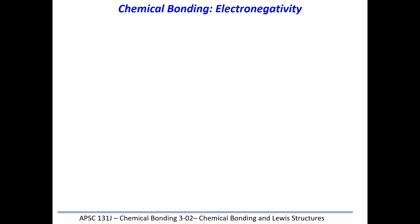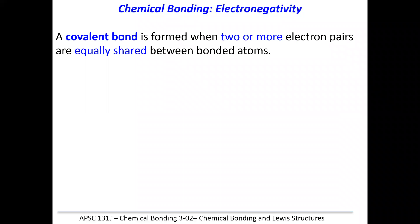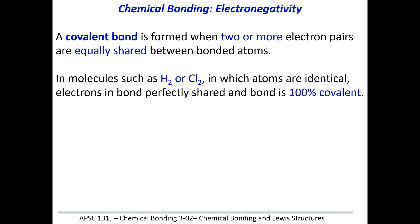Welcome everyone. Today's lecture is on chemical bonding and we're going to start with electronegativity. When you have a covalent bond established between two atoms and they share an electron pair, that electron pair is not always equally shared. More often than not, it is shared unequally. One of the atoms has a stronger pull on electrons than the other. That strength with which atoms pull on electrons is called electronegativity.